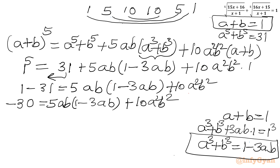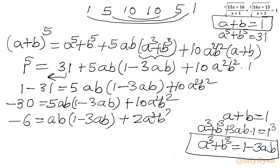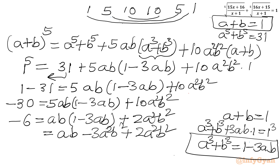Dividing through by 5 gives −6 = ab(1 − 3ab + 2a²b²). Expanding and rearranging all terms to the left-hand side, we obtain a²b² − ab − 6 = 0. This is a quadratic equation in ab.